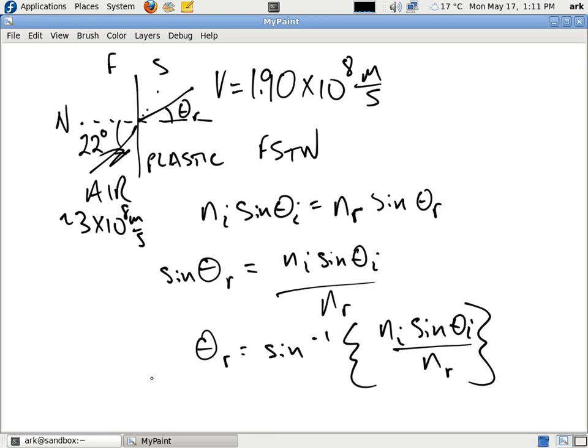Now, what are we given and what can we plug in at this point? Do we know the index of refraction of air? Yes, we do. Air is equal to 1.0003, and that's unitless. Do we know the angle of incidence? Yes, we do. That's 22 degrees.